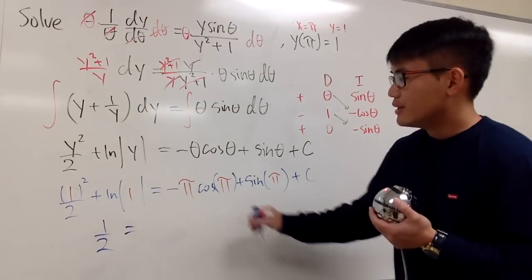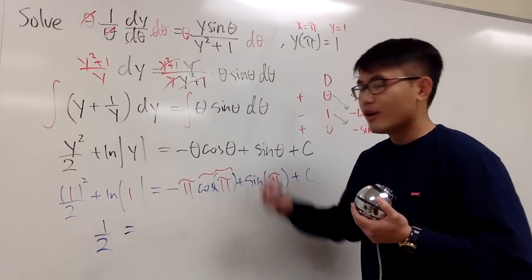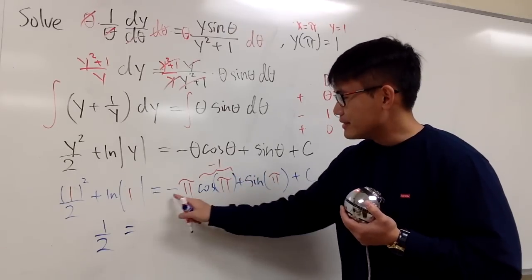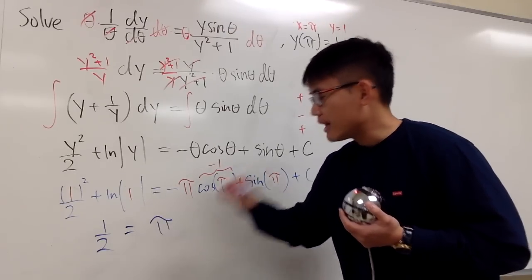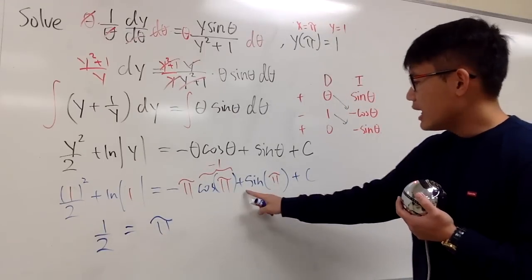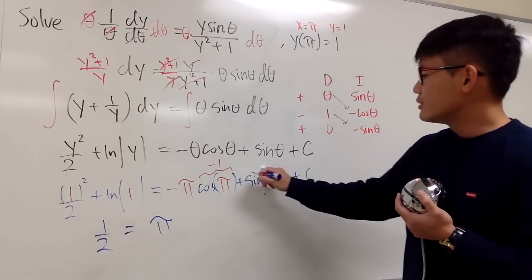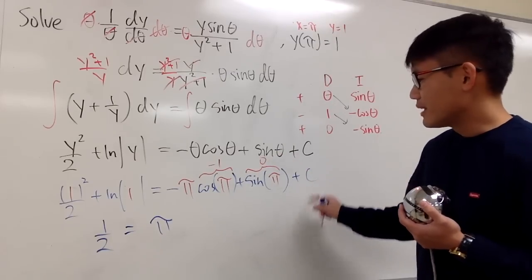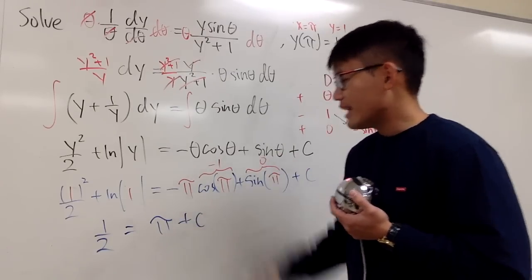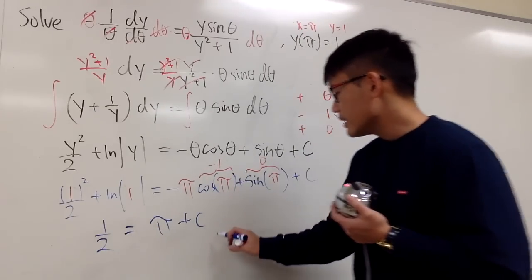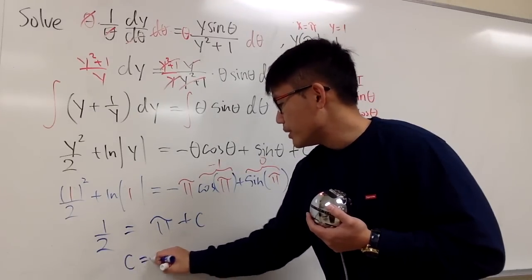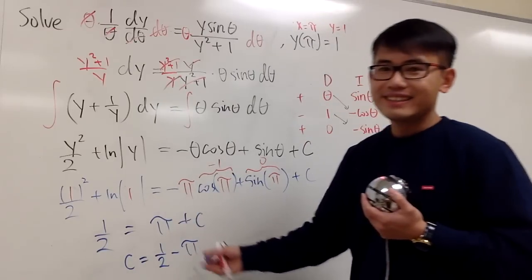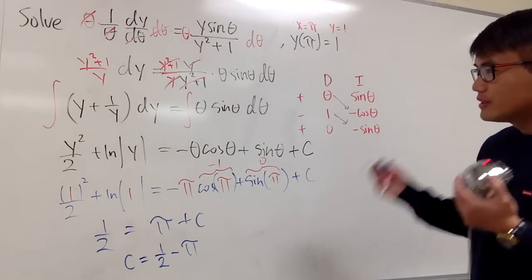This is going to give us, what's cosine of pi? Cosine of pi is negative 1. So negative 1 times negative pi is going to give us positive pi, plus sine of pi. This right here is 0. So we just have plus C after that. And of course, we can subtract pi on both sides. Therefore, C will be 1 half minus pi. And we are pretty much done.